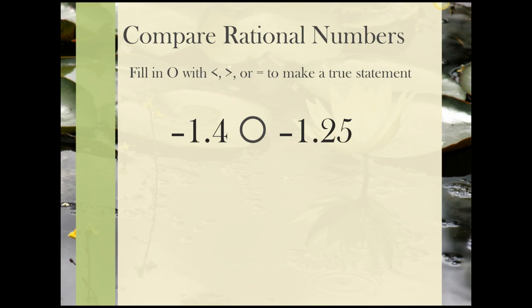In our first problem, let's compare -1.4 to -1.25. Just as we did when comparing integers, the first thing we want to do is check the signs on the numbers. Since both of these are negative, we'll have to look at the problem a little more closely. We also need to remember that when working with negative numbers, we have to kind of think in opposite directions. A number line can be a handy tool when comparing rational numbers, just as it was when comparing integers.